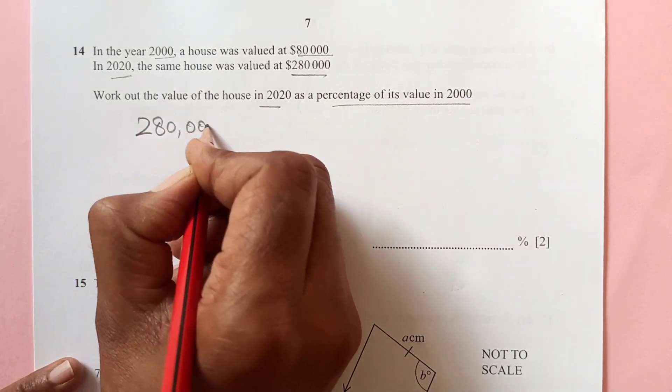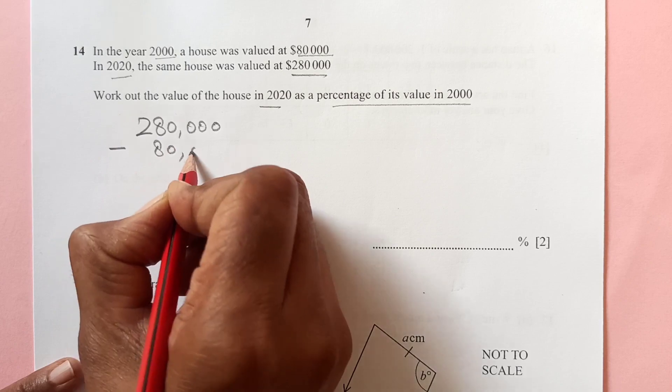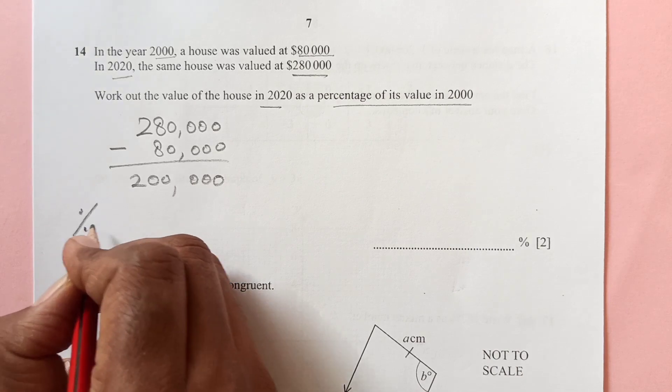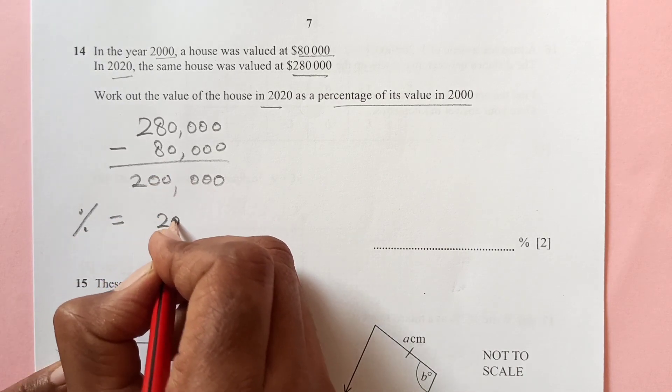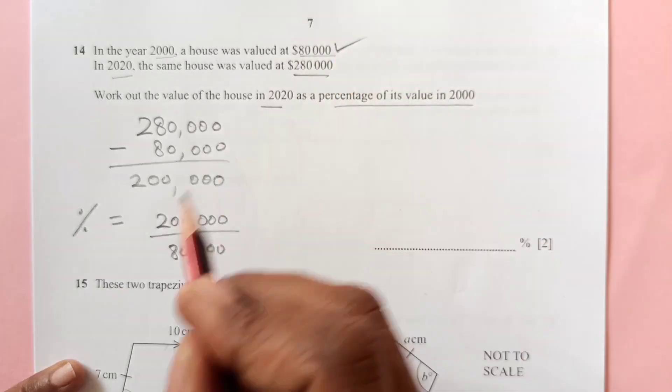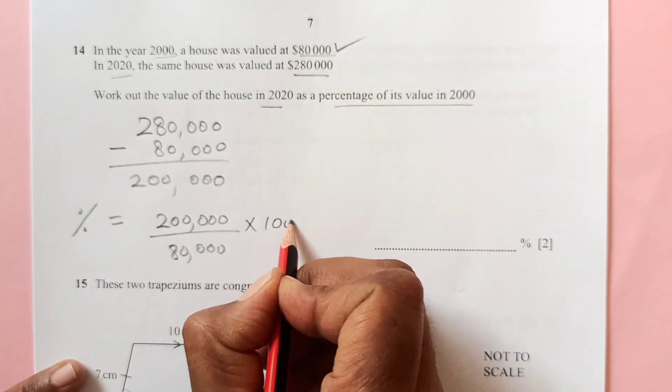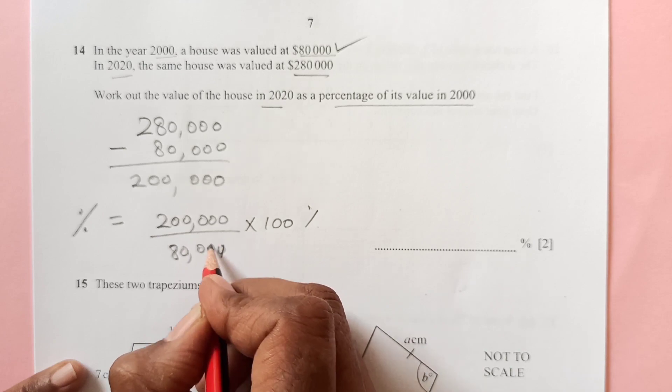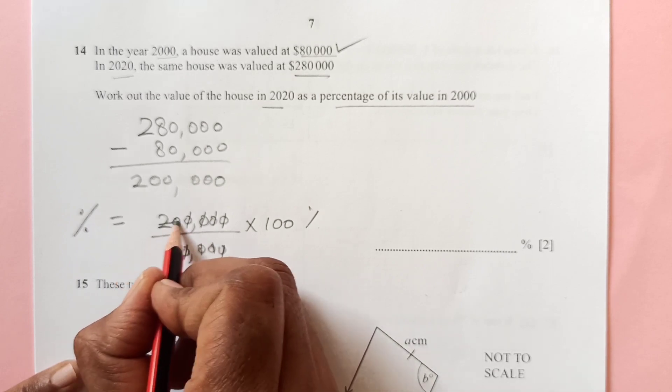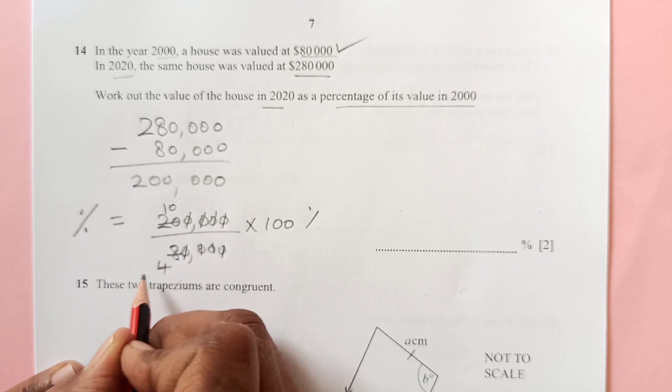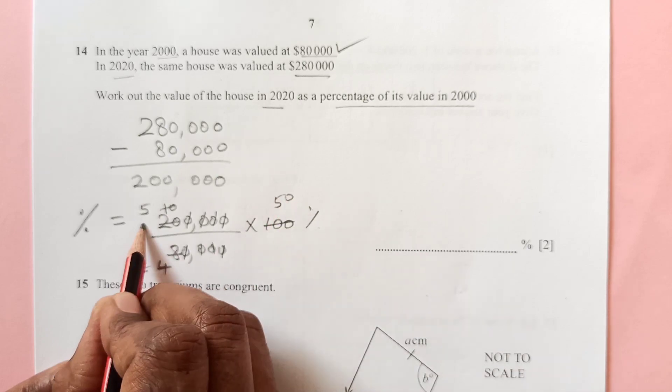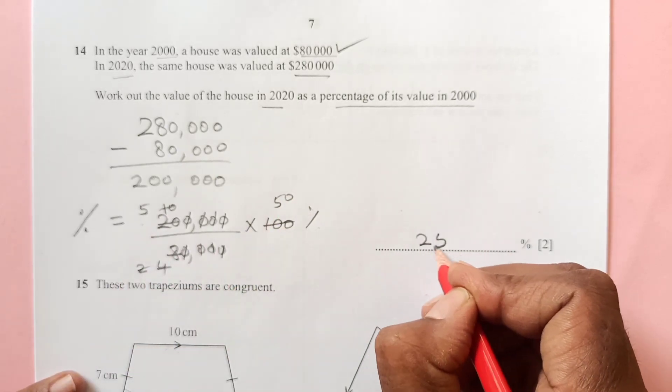So first of all we will take the total increase, which is 200,000. Now we are looking for the percentage. So percentage change is going to be 200,000. Remember that you always take down the original value from where it started. It started in 2000, right? So times 100, that will give you the percentage. So now we can simplify. We have 5 times 50 which is 250 percent.